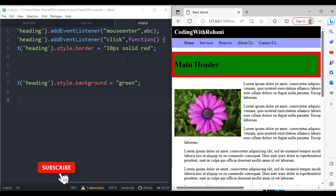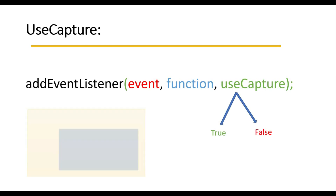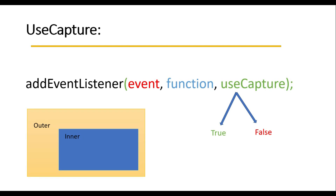The addEventListener method also has a third parameter called useCapture, which has two values: true and false. Suppose you have two divs — an inner and outer — and you add a click event to both. When you click the inner div, changes happen in the outer div as well. If useCapture is true, the outer div runs first, then the inner div. If false (the default), the inner div runs first, then the outer div.